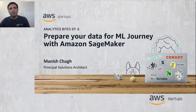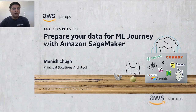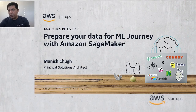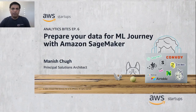Hello everyone, and welcome to the sixth episode of Analytics Byte series, a video series where we explore common analytics use cases and how to architect for them. My name is Manish Chuk, and I'm your host today. I'm a principal solutions architect on the startups team here at AWS, based out of the San Francisco office. In my day-to-day activities, I help startup customers build, deploy, and run scalable and cost-effective workloads on AWS cloud. In today's episode, I'm going to talk about how to prepare your data for machine learning journey with Amazon SageMaker.